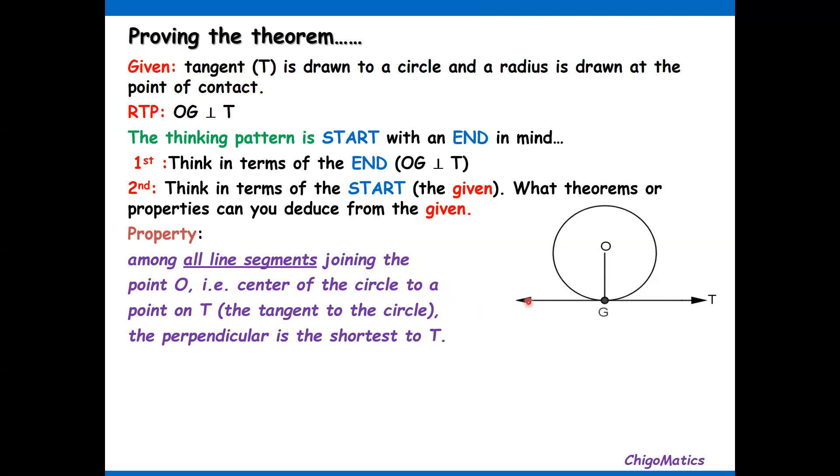What this means is if I join from O to any point on T, the tangent, OG is the shortest. The others will be longer than OG.